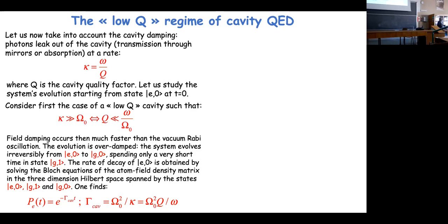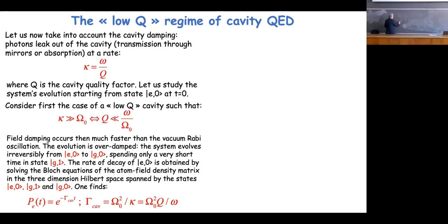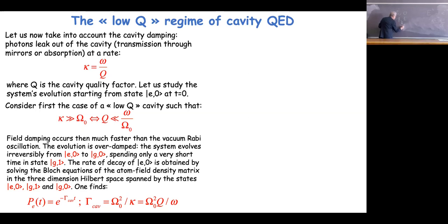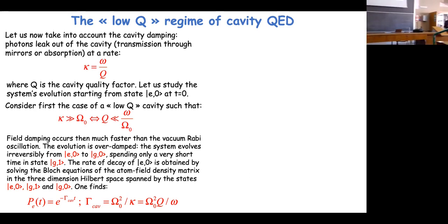In this case, as soon as a photon is emitted in the cavity the photon is lost, so the photon cannot be reabsorbed later because it has gone away, and you will have a fast damping of the energy in the system. The dynamics in this case is a three-level system: you have to consider the coupling between |e,0⟩, |g,1⟩, and |g,0⟩. To describe this you have to use the Bloch equations.